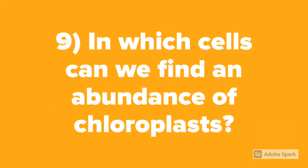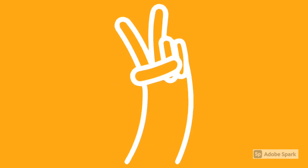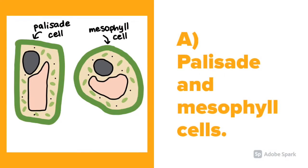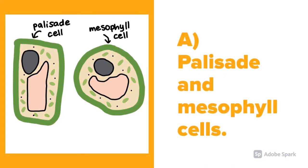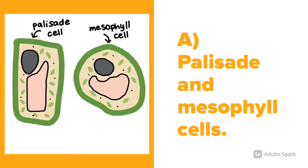Question number 9: In which cells can we find an abundance of chloroplasts? The answer is palisade and mesophyll cells.